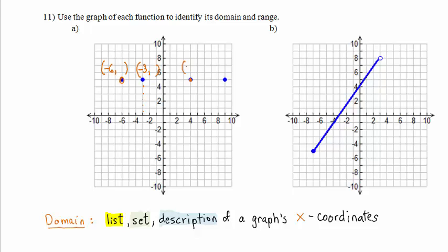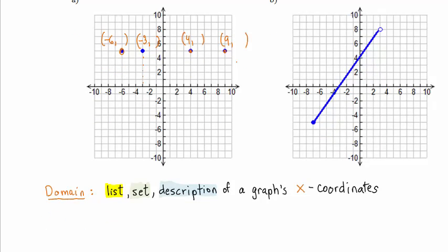This point right here, its x-coordinate is 4. This point here, its x-coordinate is 9. So if we list the x-coordinates for Part A, we get that its domain is the set {-6, -3, 4, 9}.